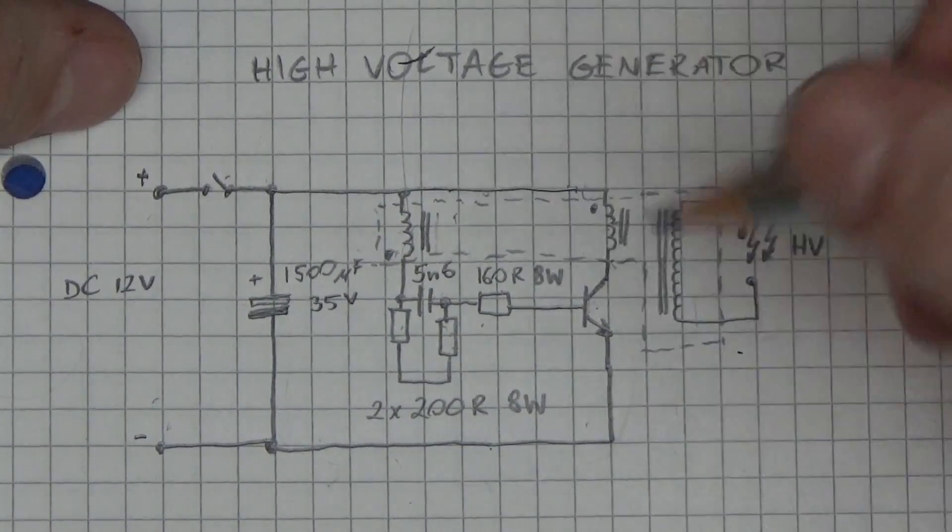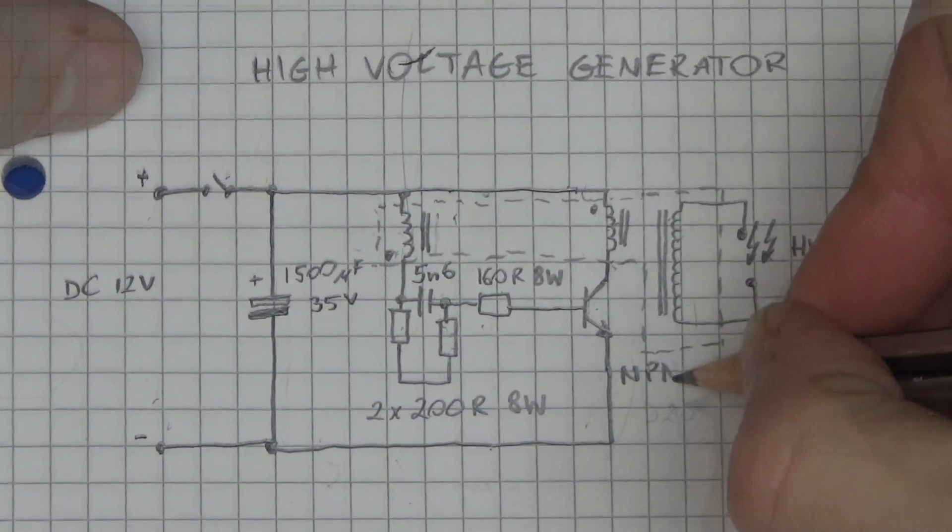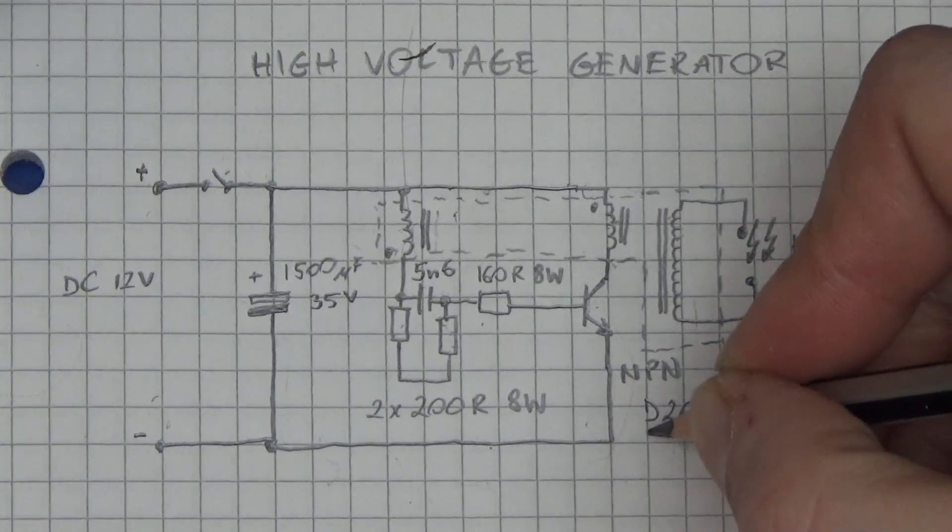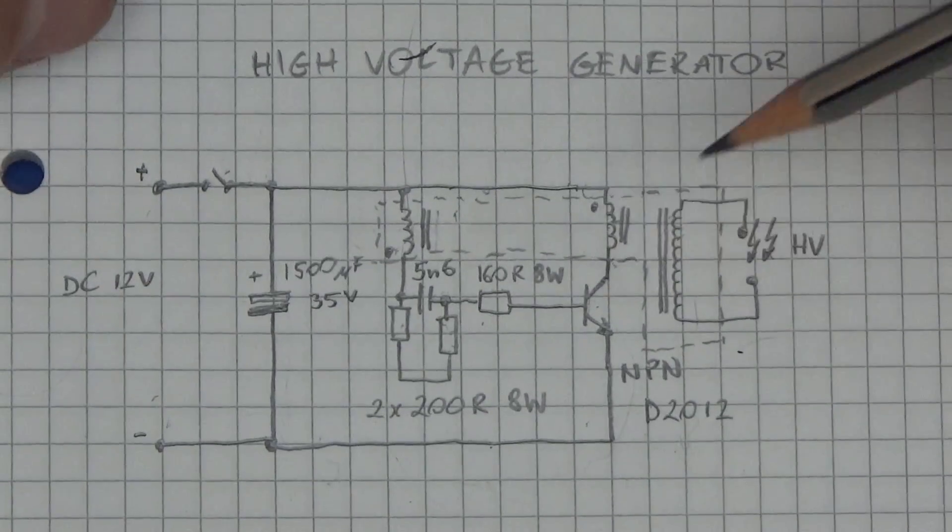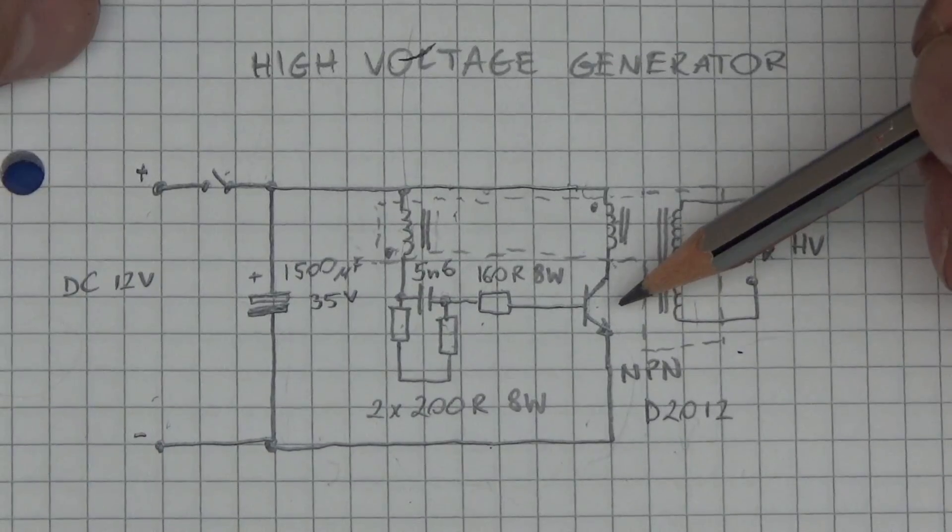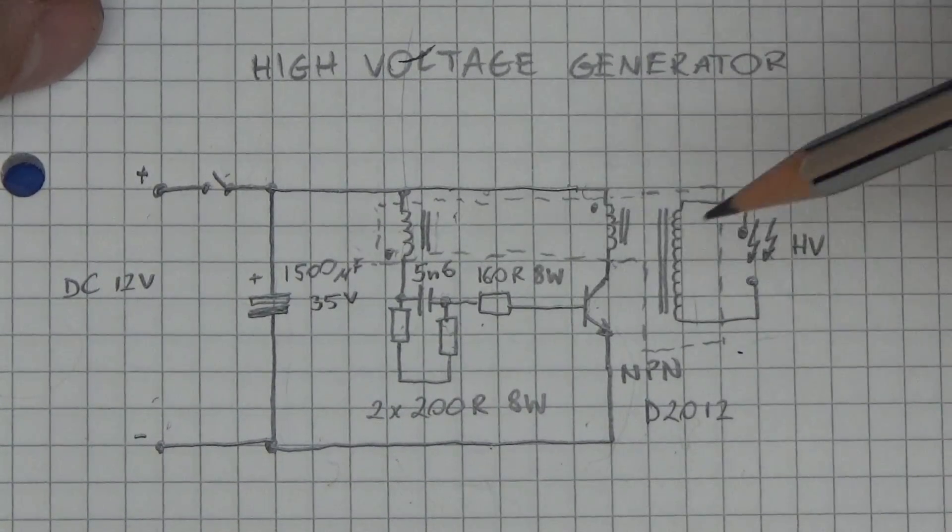And then we've got a transistor. This is an NPN transistor, a D2012. You can look up a data sheet for it if you wanted to, but this transistor is not critical. Any power NPN transistor will do in this configuration.